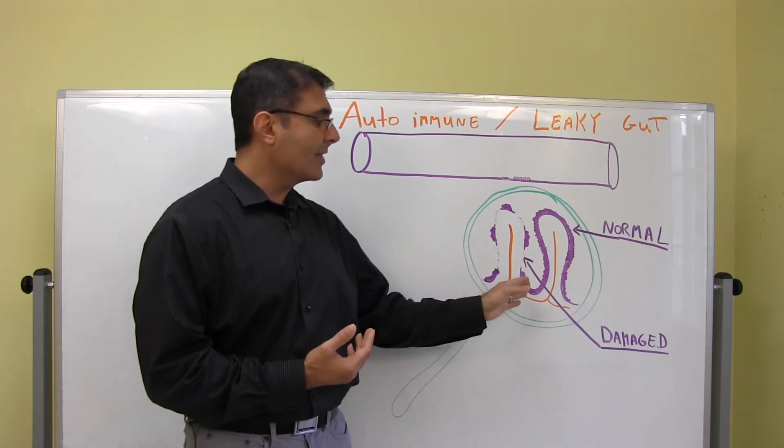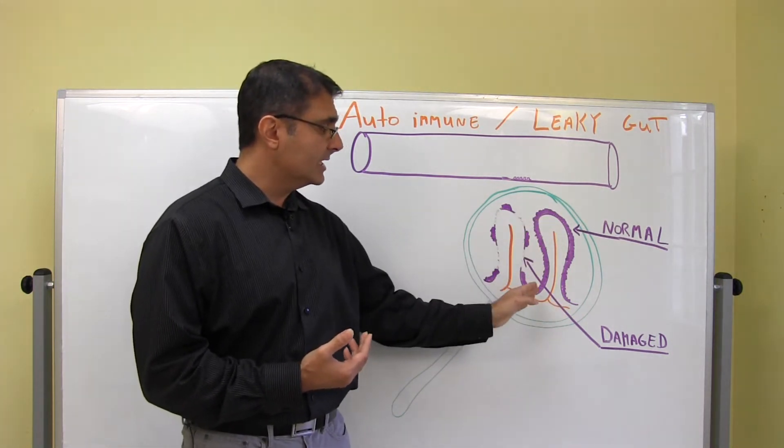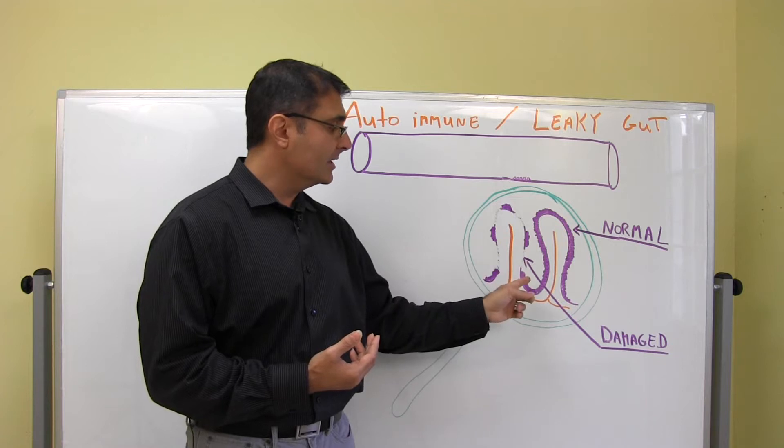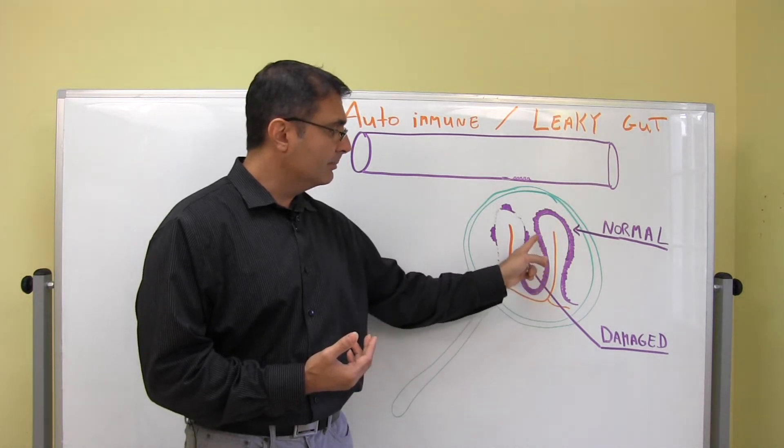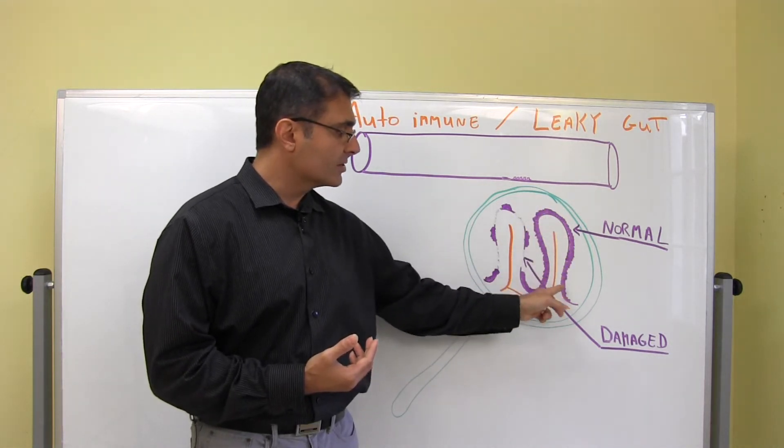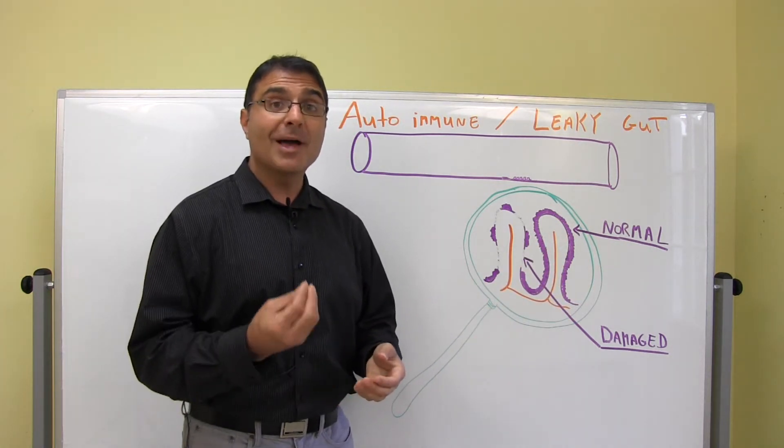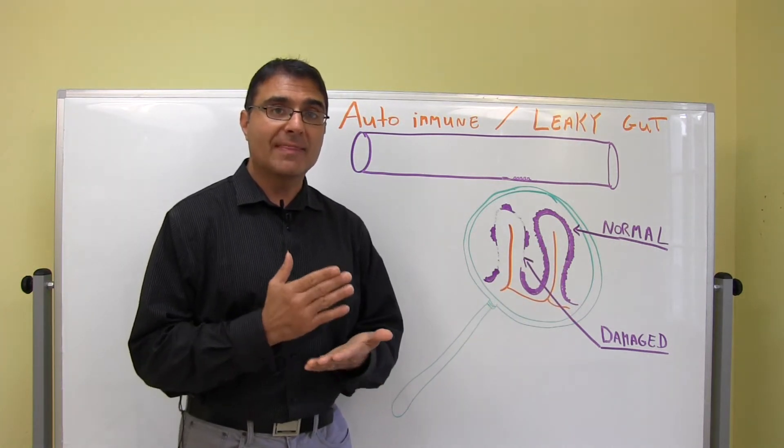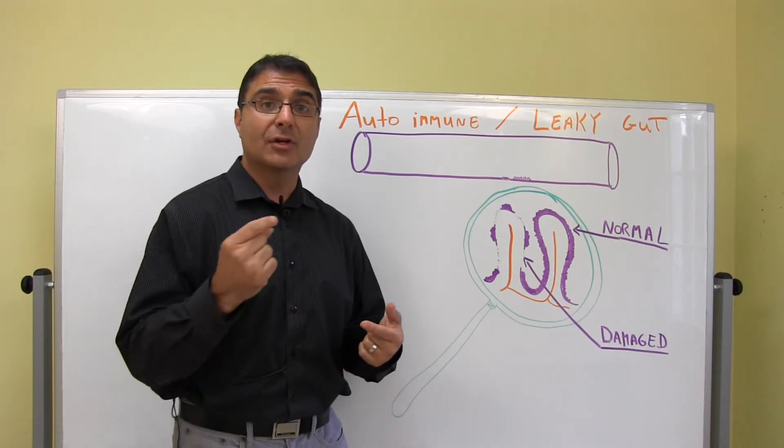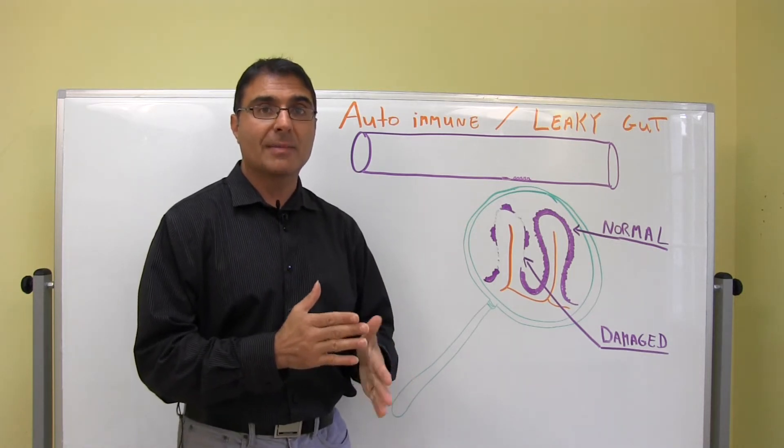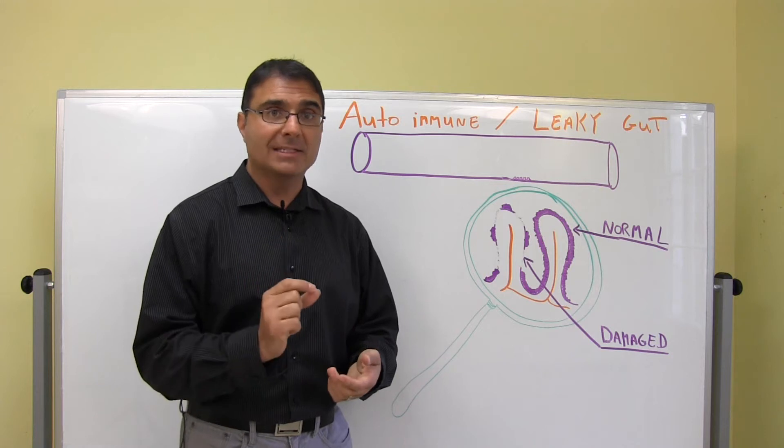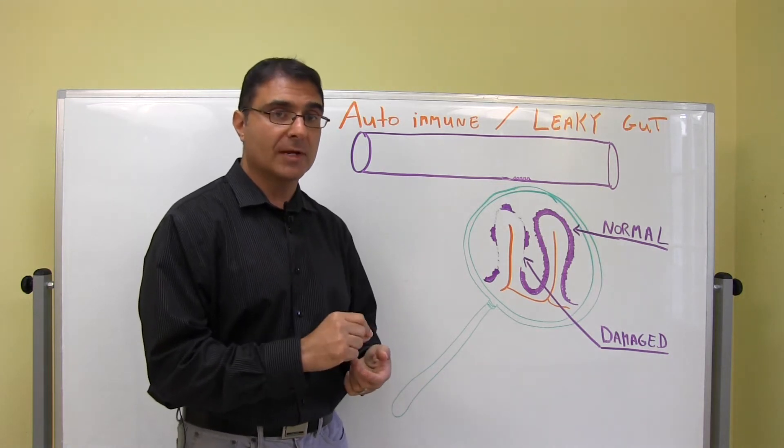And what you'll see, or rather a normal villi, and what you'll see in this villi is you'll see this border of even smaller fingers, and those smaller fingers are called micro villi. And the micro villi have a very important job, and that job is to allow the good stuff into the bloodstream and to prevent the bad stuff from getting into the bloodstream.